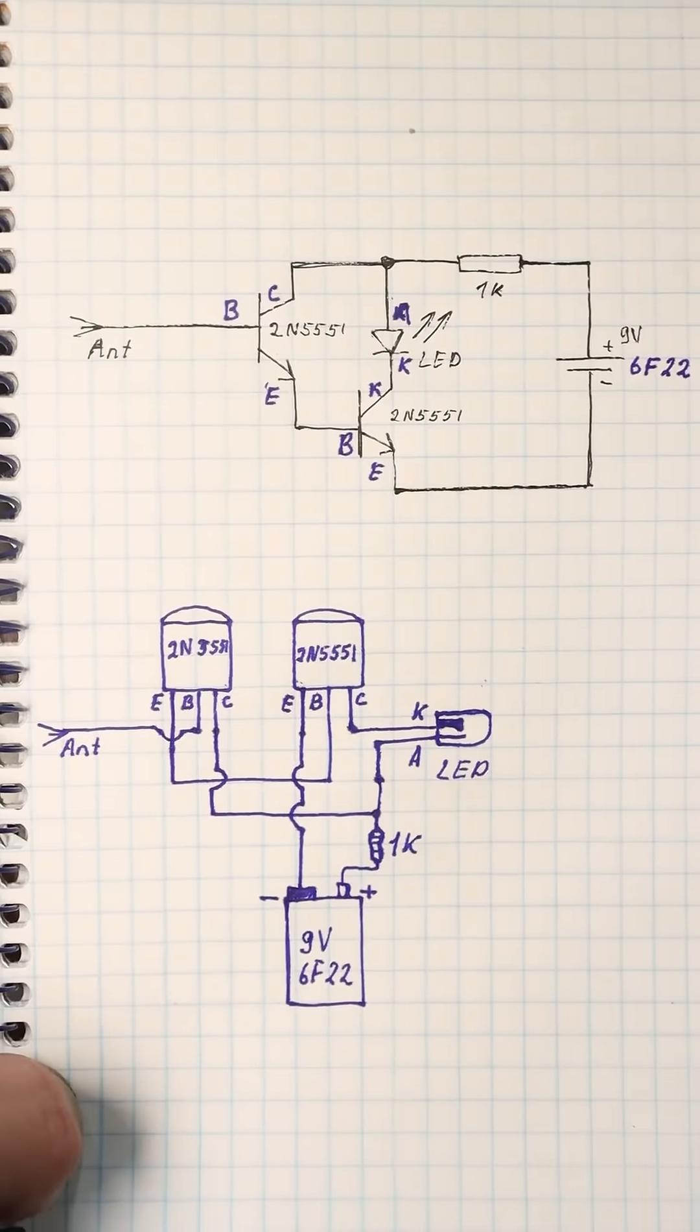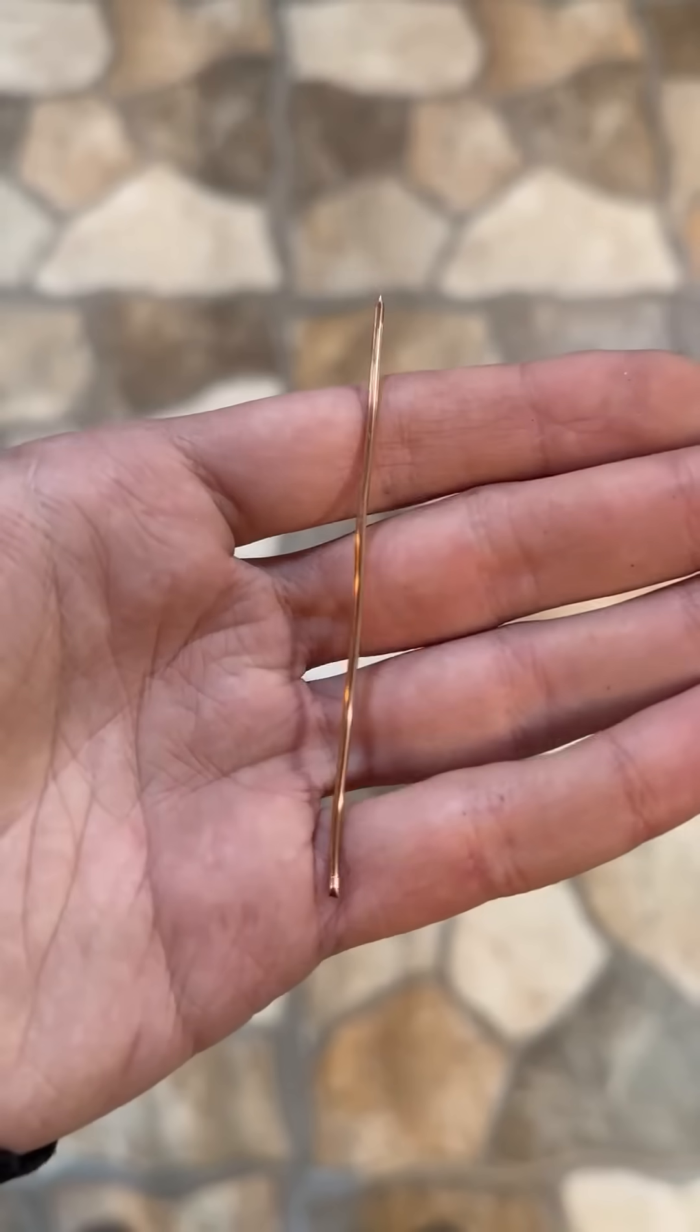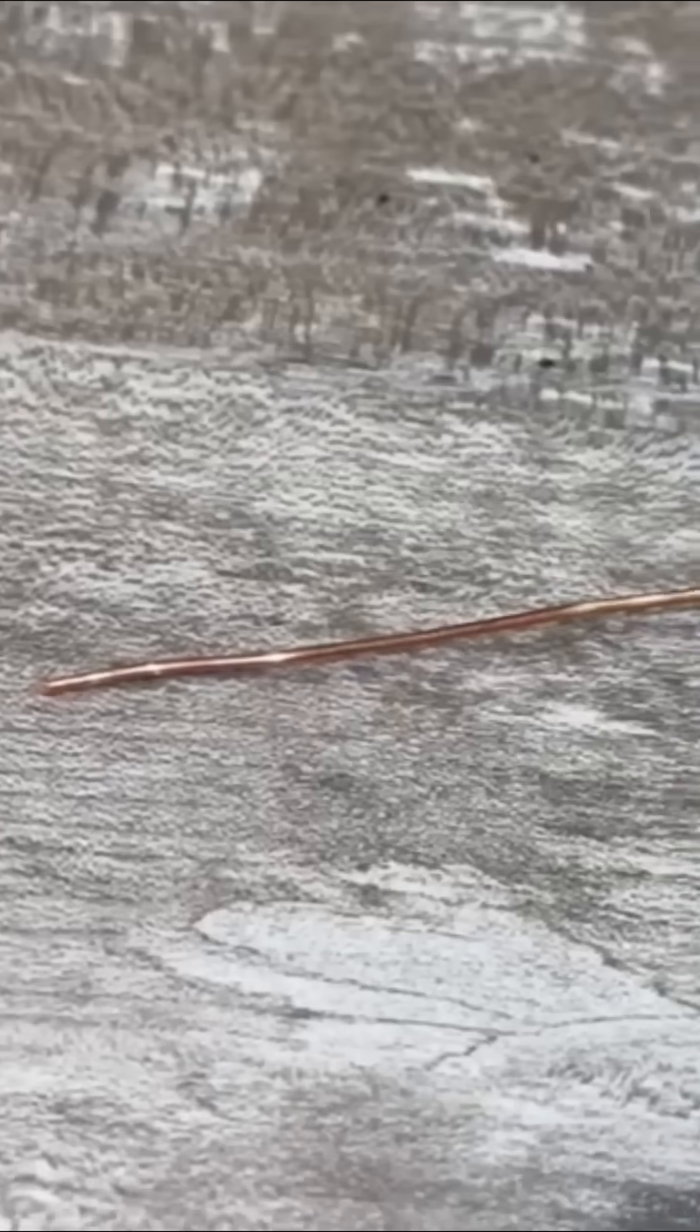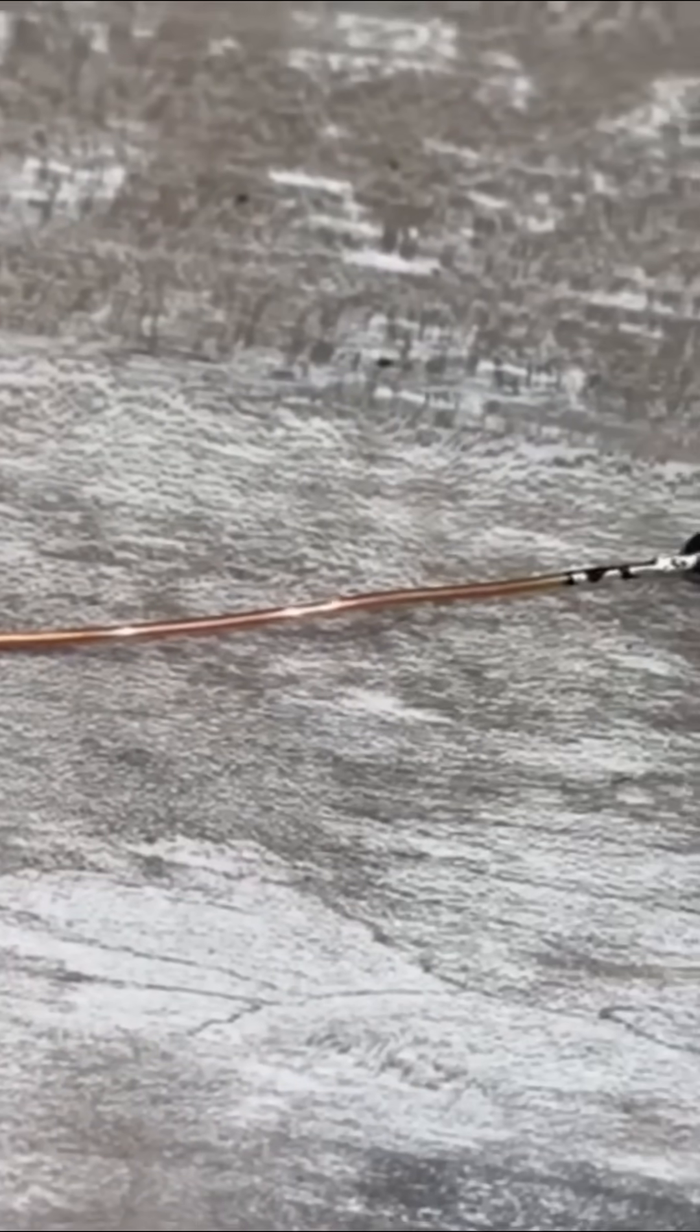Next, connect everything according to the diagram. A piece of single-core copper wire with a diameter of 1 mm and a length of 5 to 10 cm is used as an antenna.